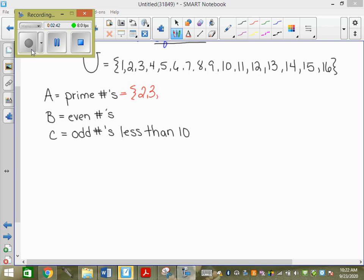So 1 is not prime. So we have 2, we have 3, not 4. What's 2? 2 is the only even prime. So 2, 3, 5, 7, 11, 13. Then I have even numbers: 2, 4, 6, 8, 10, 12, 14, 16. Then I have odd numbers less than 10: 1, 3, 5, 7, 9.